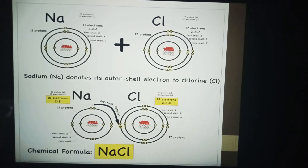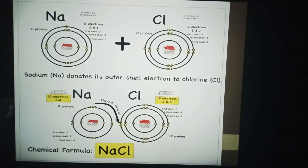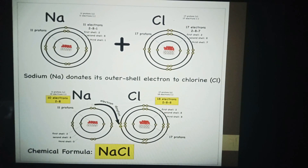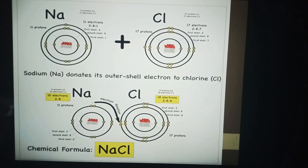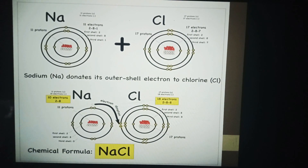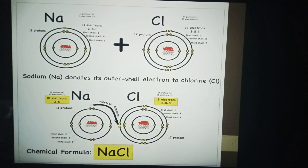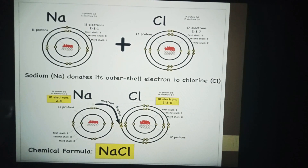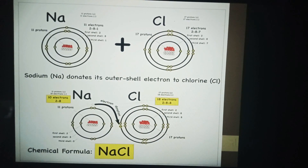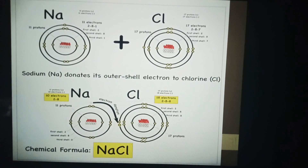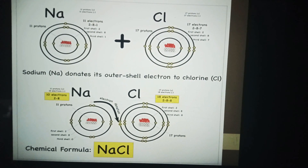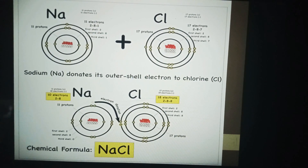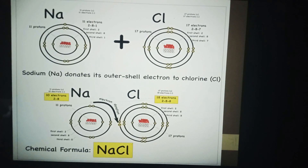Here is the ionic bond between Na and Cl — sodium and chlorine. Sodium donates its outer shell electron to chlorine, and chlorine gains this electron. Sodium becomes positively charged and chlorine becomes negatively charged.